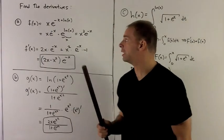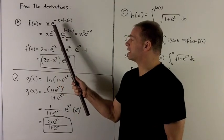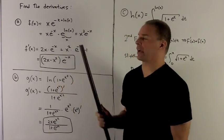Find the following derivatives. For my first function, I have f(x) equal to x times e to the minus x plus natural log of x.